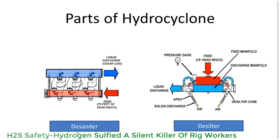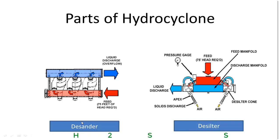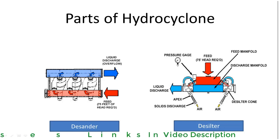This is the desander hydrocyclone. The desander may have cones of diameter from 6 inch to 12 inch, and the unit may have 1 to 3 cones. Each cone may have the capacity to handle drilling fluid of more or less 500 GPM.